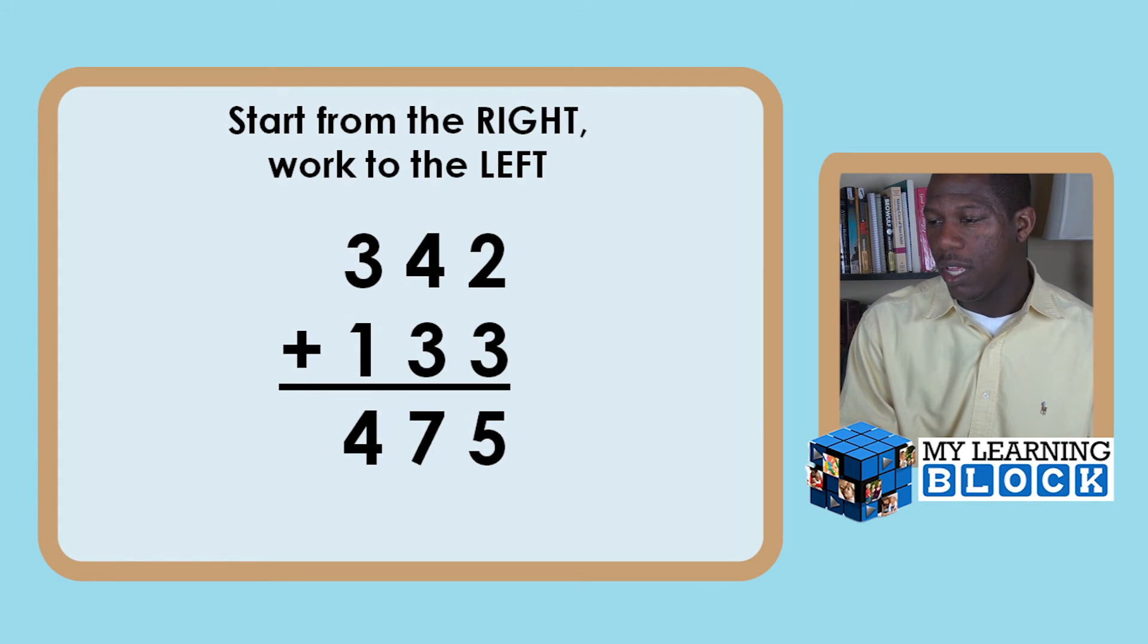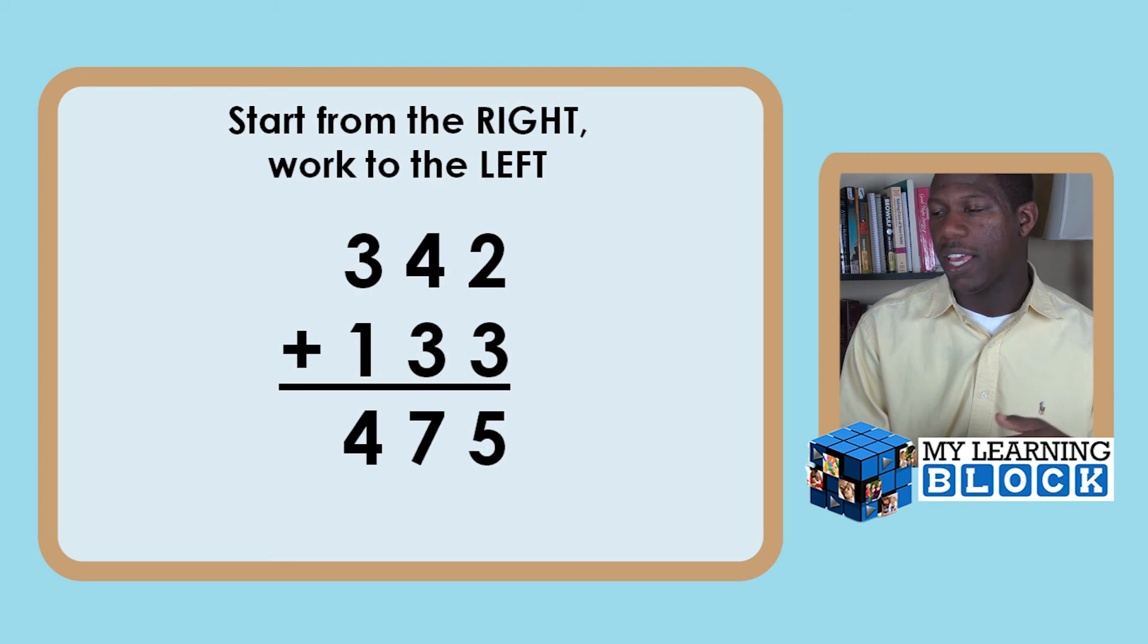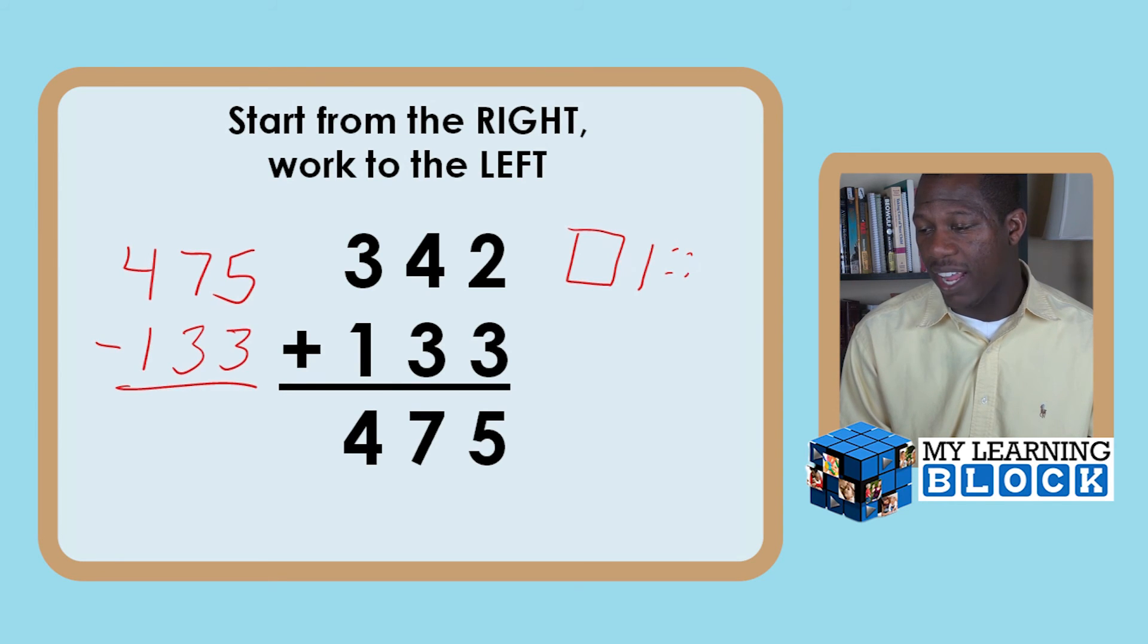If you have 475, you say 342 plus 133 equals 475. Well then you ask your child to prove it and they can prove it using their flats, rods, and units, or they can prove it by working it in reverse. So they will take 475 and subtract 133. And if their answer happens to be 342, then they're right.